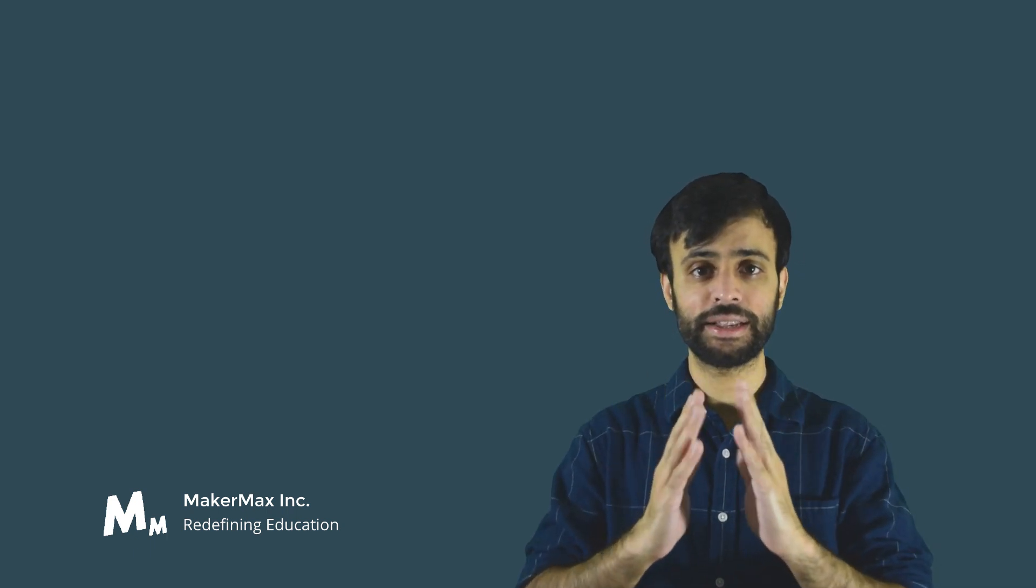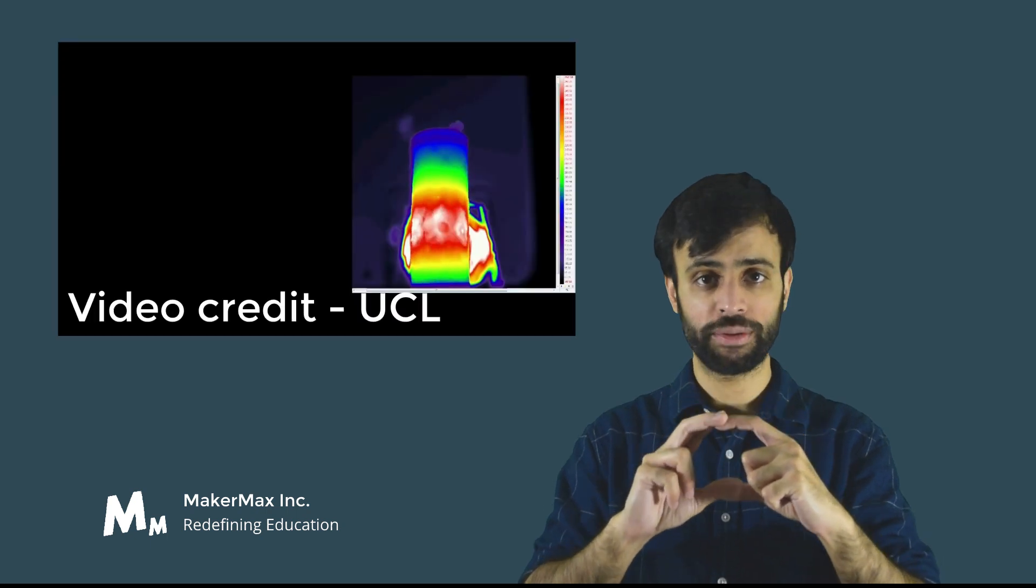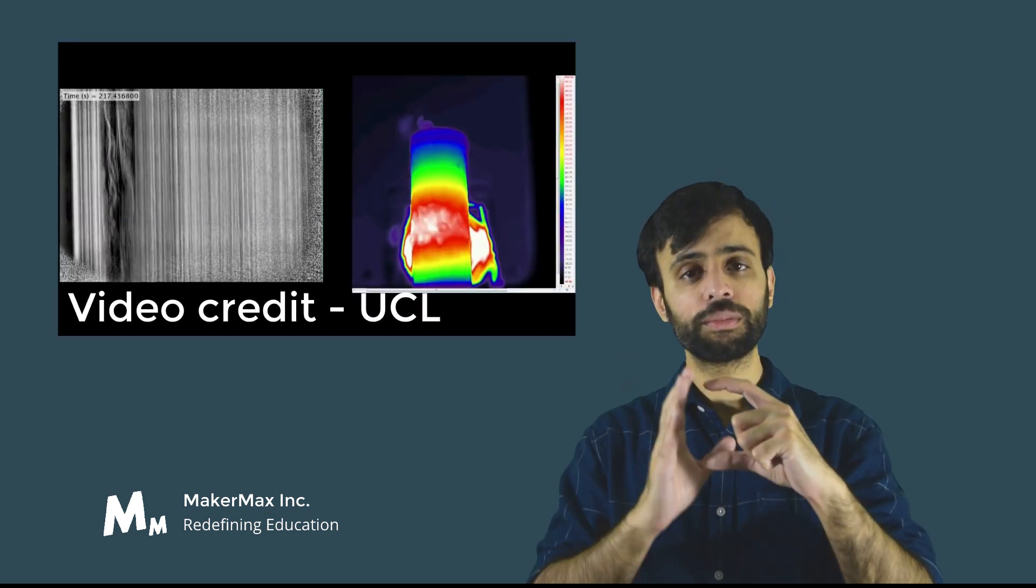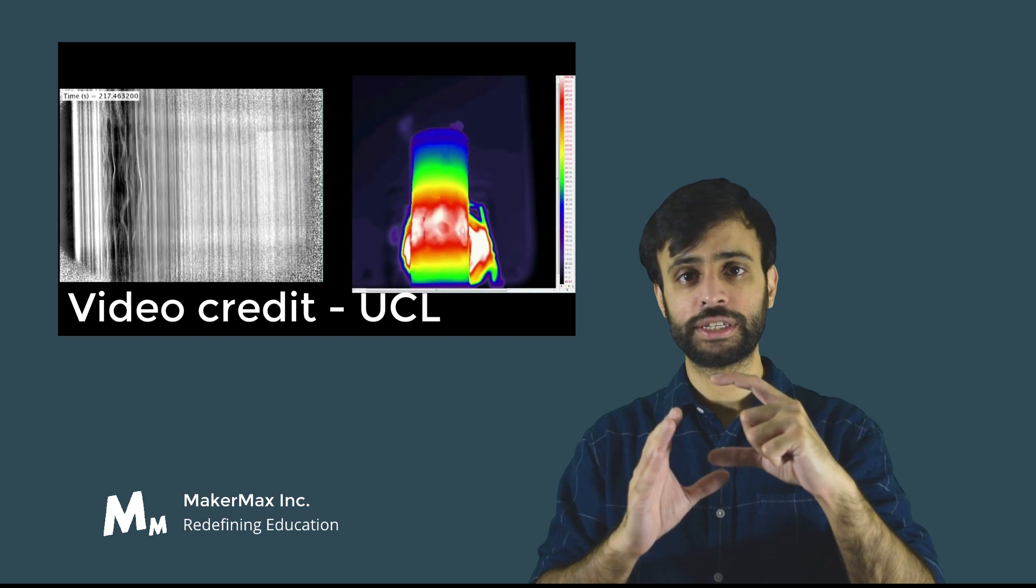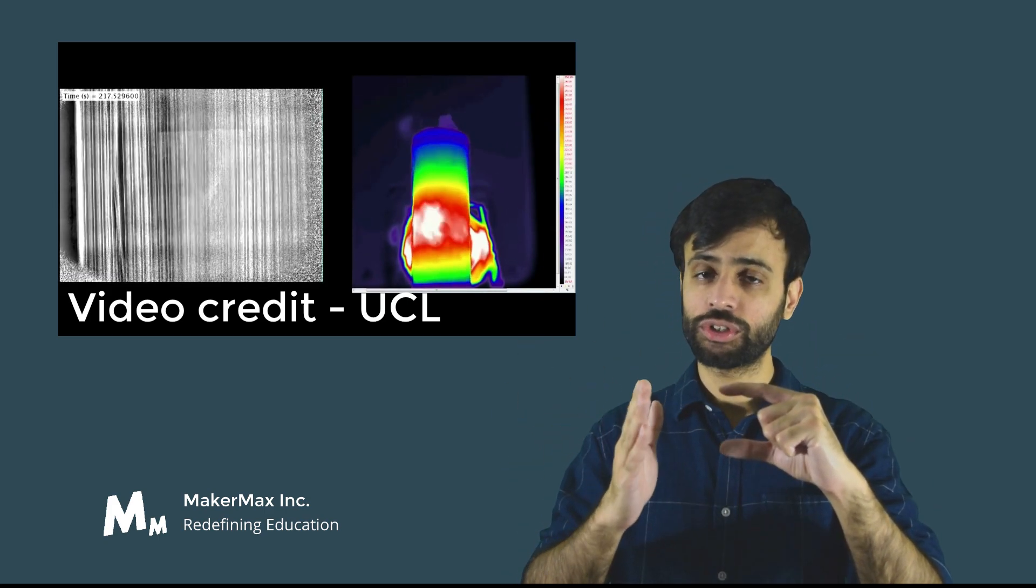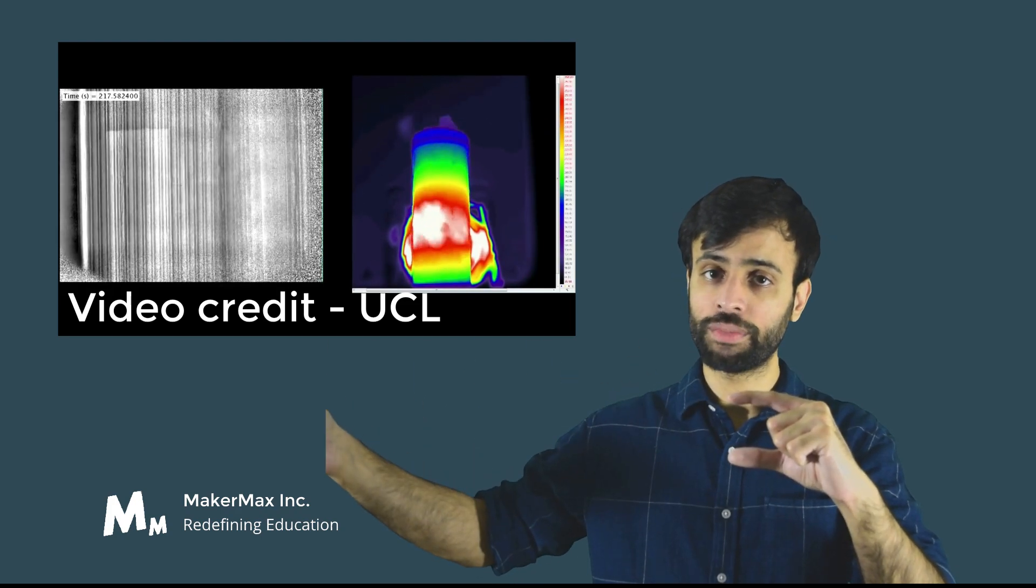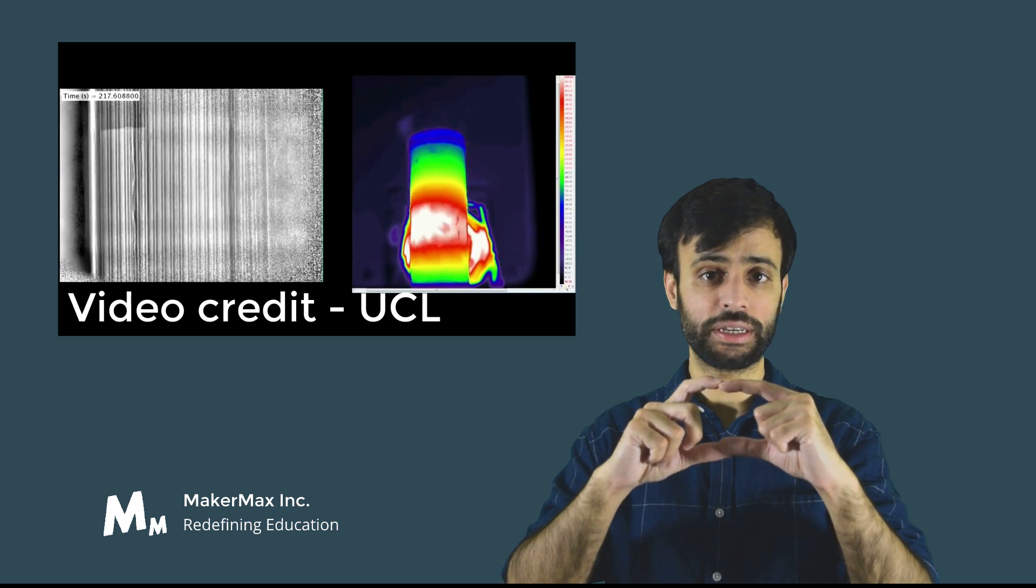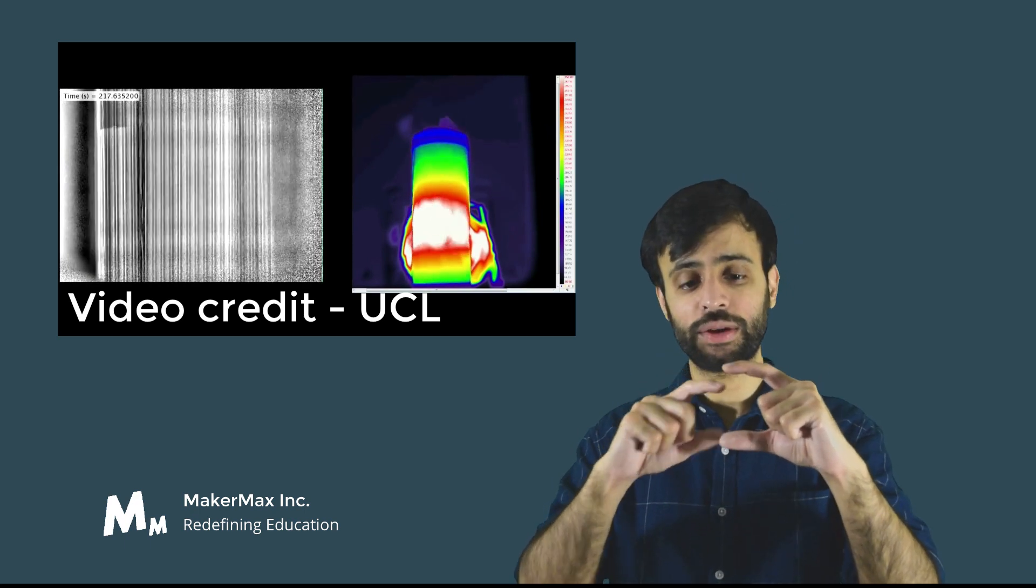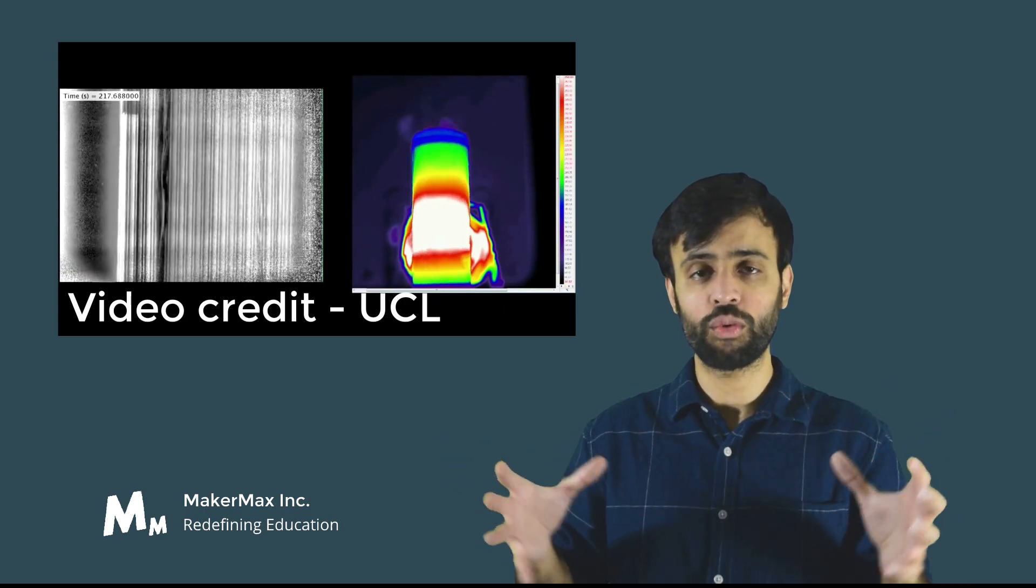If you're looking at a single cell, say an 18650 cylindrical lithium-ion cell, thermal runaway is not caused all of a sudden. It's a gradual procedure, but the graduality may happen over a few months or instantaneously. Let's understand what that chain reaction is so we can understand why it happens and how we can control it.